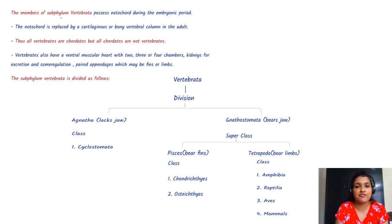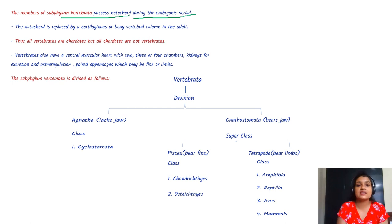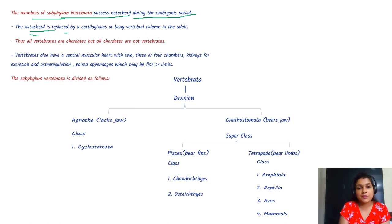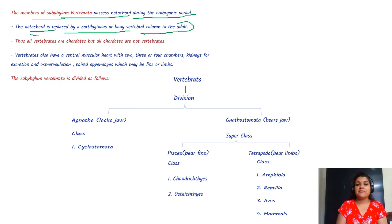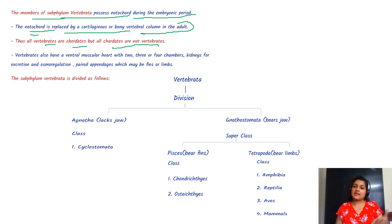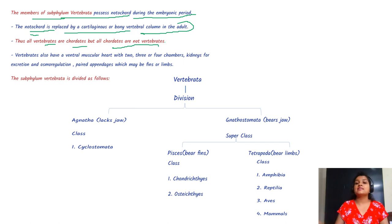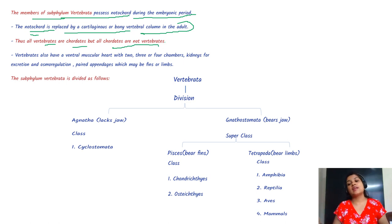Members of subphylum Vertebrata possess a notochord during the embryonic period. After that, the notochord is replaced by a cartilaginous or bony vertebral column. Thus all vertebrates are chordates, but all chordates are not vertebrates — only those where the notochord is replaced by a vertebral column are called vertebrates.